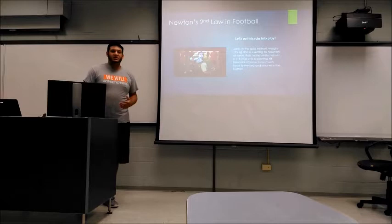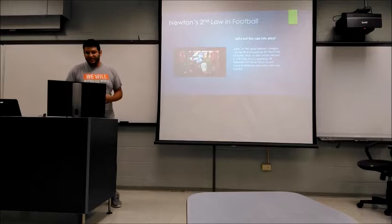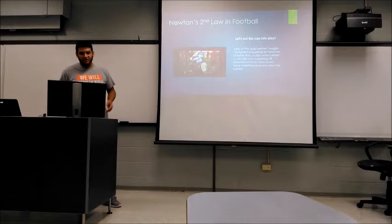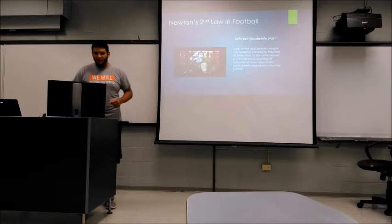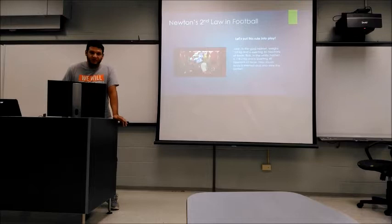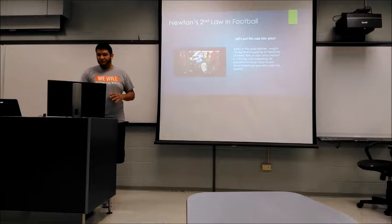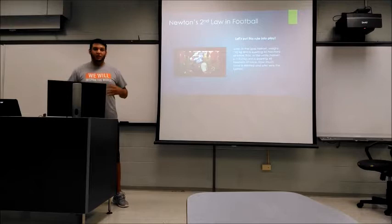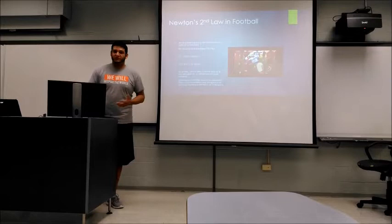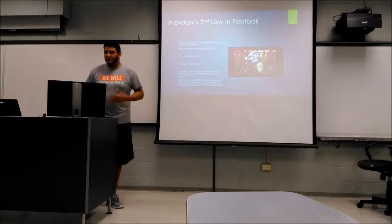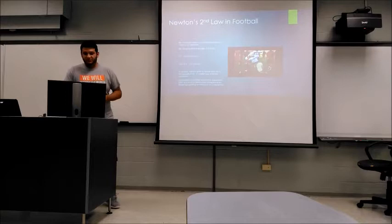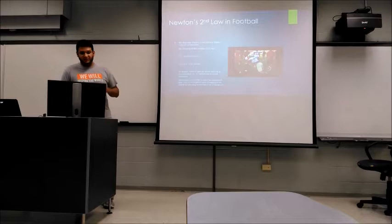Let's do a little math to figure out how this rule applies. Here you can see two offensive linemen going against each other. We have John in the gold hat and Bob in the white hat. Bob seems to be a little smaller and not doing as well. John weighs 125 kilograms and is exerting about 60 newtons of force. Bob is about 118.2 kilograms and is exerting about 48 newtons of force. We want to figure out how much force is exerted in total and who wins. We need to find the net force: 60 minus 48 gives us a net force of 12 newtons, acting in John's direction.